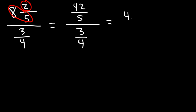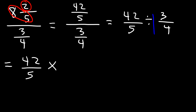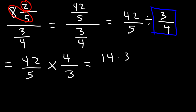So now we can rewrite this as 42 over 5 divided by 3 over 4. Then we need to use something called keep-change-flip: keep the first fraction the same, change division to multiplication, and then flip the second fraction — 3 over 4 becomes 4 over 3. Now it turns out we can simplify before we multiply. 42 is 14 times 3, so we can cancel the 3, and we're left with 14 times 4.